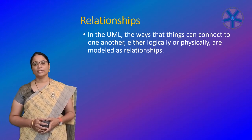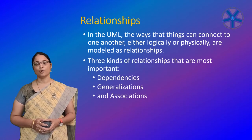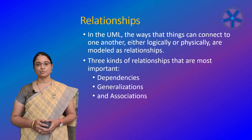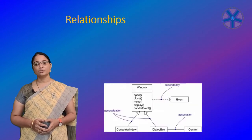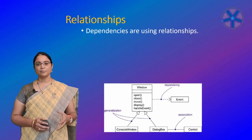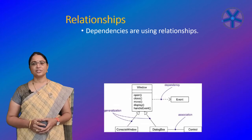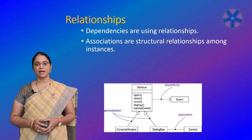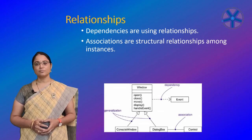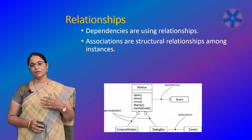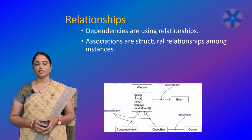In UML, the ways that things can connect to one another, either logically or physically, are modeled as relationships. In object-oriented modeling, there are three kinds of relationships that are most important: dependencies, generalizations, and associations. Dependencies are using relationships — for example, pipes depend on a water heater to heat the water they carry. Associations have structural relationships among instances — for example, rooms consist of walls and other things. Walls may have embedded doors and windows, and pipes may pass through walls.